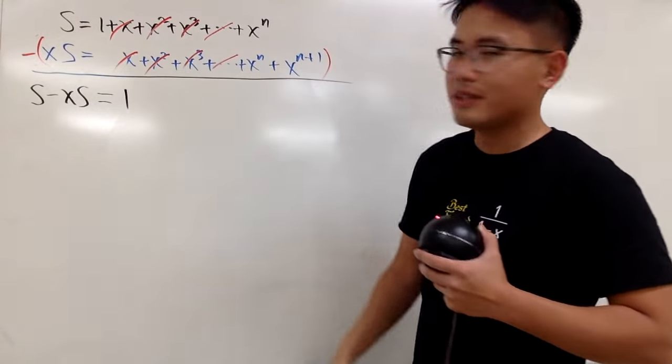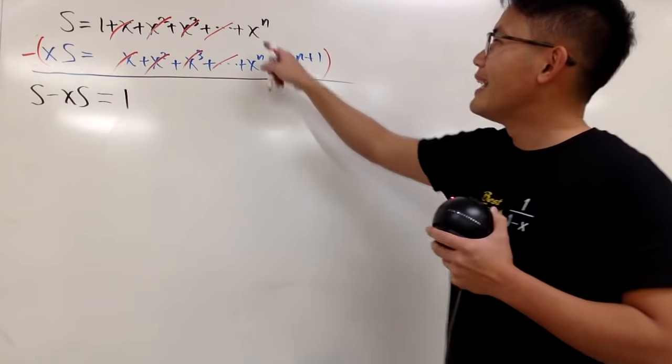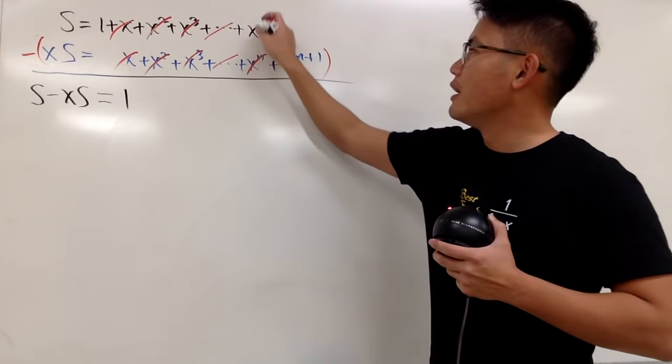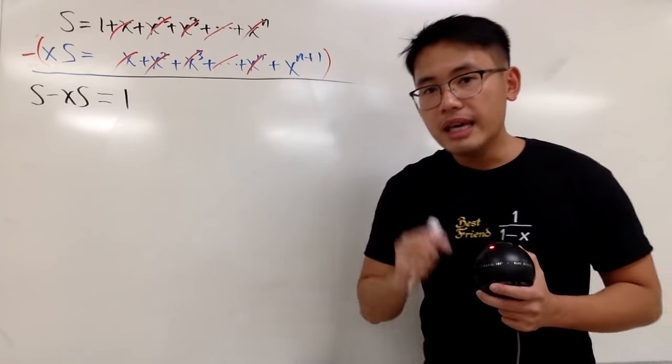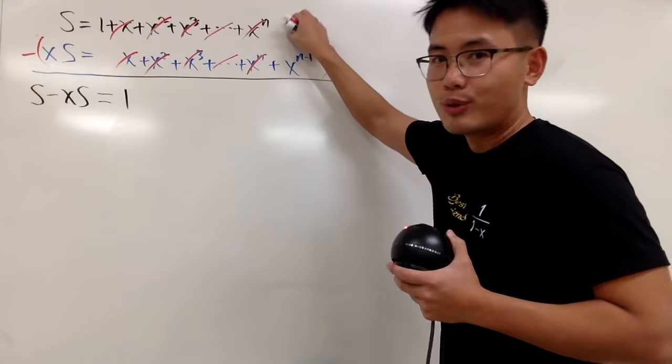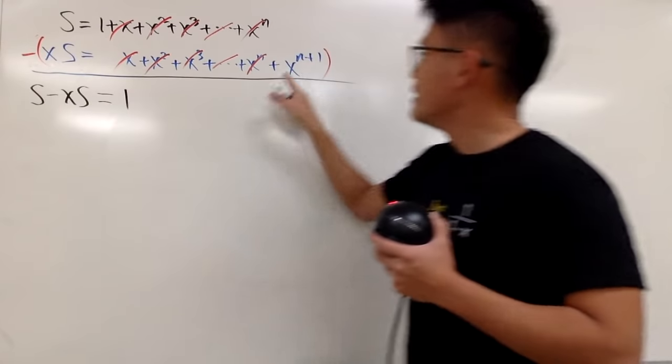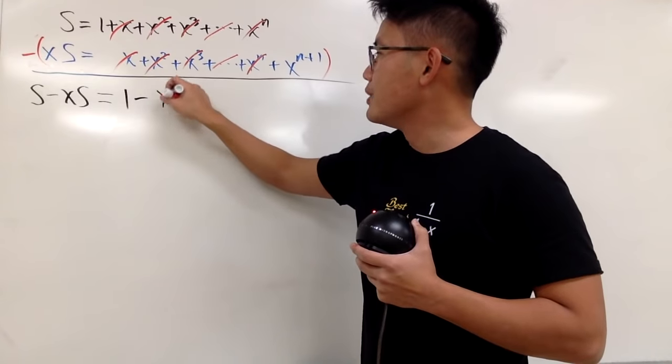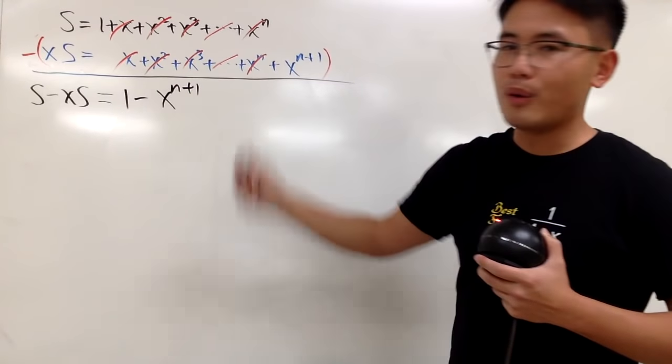Everything right here, and those things will be canceling out as well. Likewise, x to the nth power minus x to the nth power, they will also cancel. In the end, don't forget we have pretty much a 0 right here, minus this. So we end up with minus x to the n plus 1 power, like that.